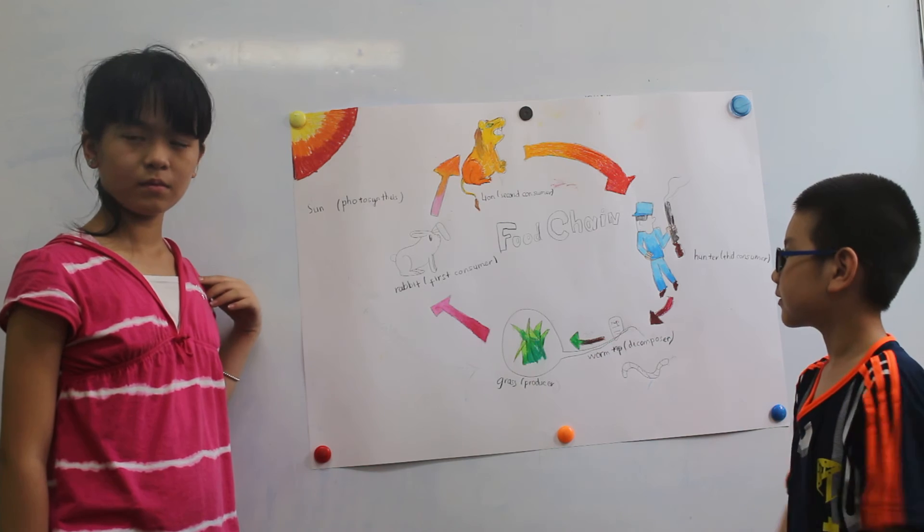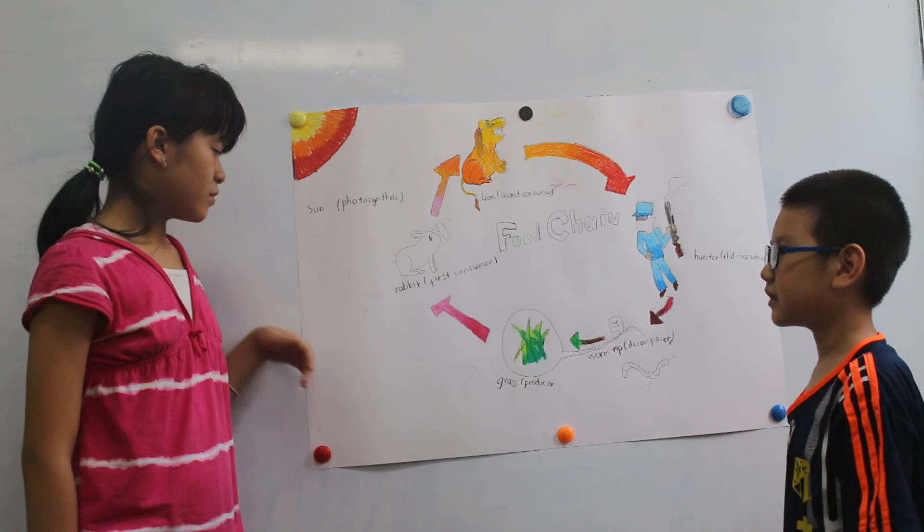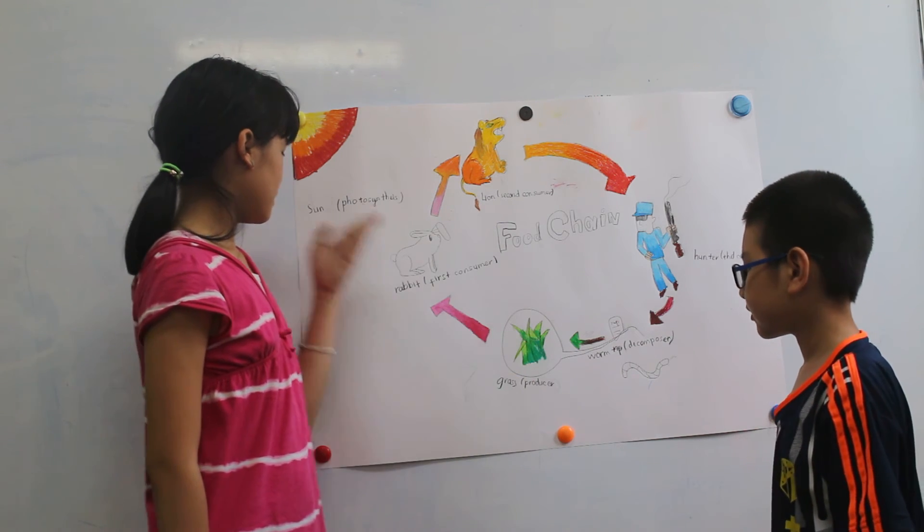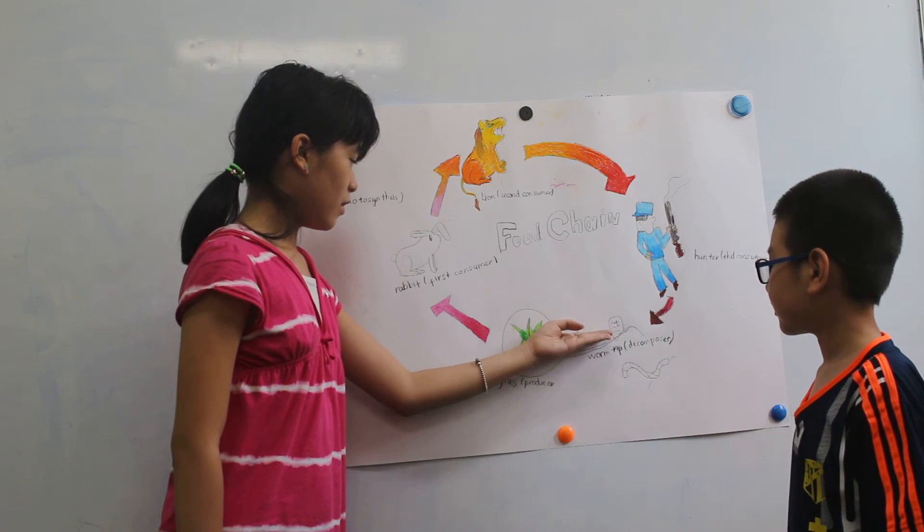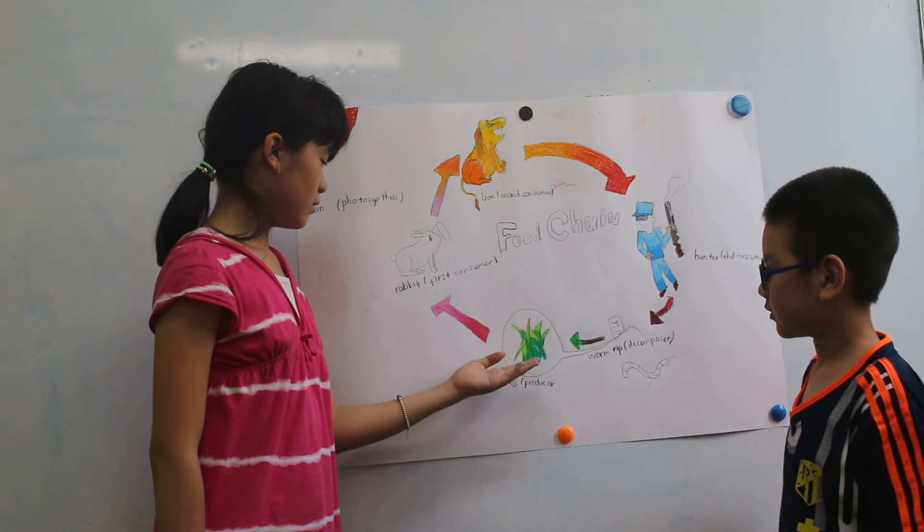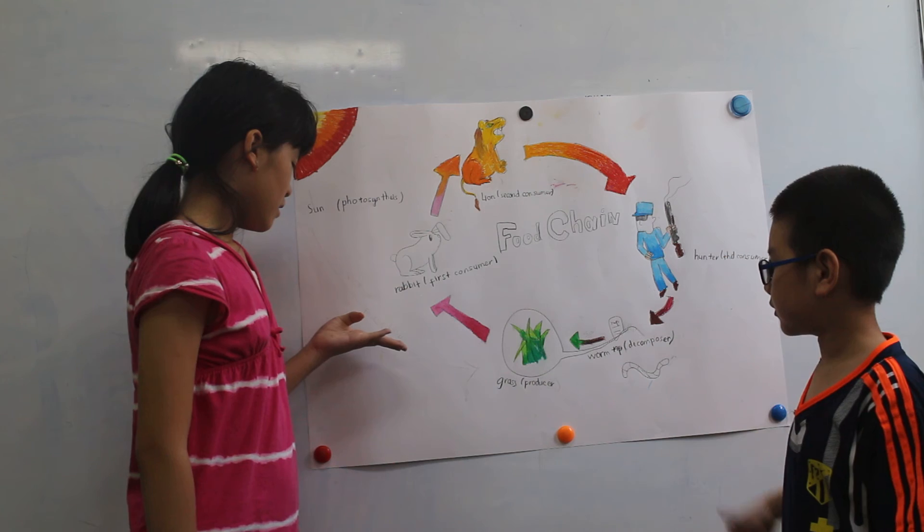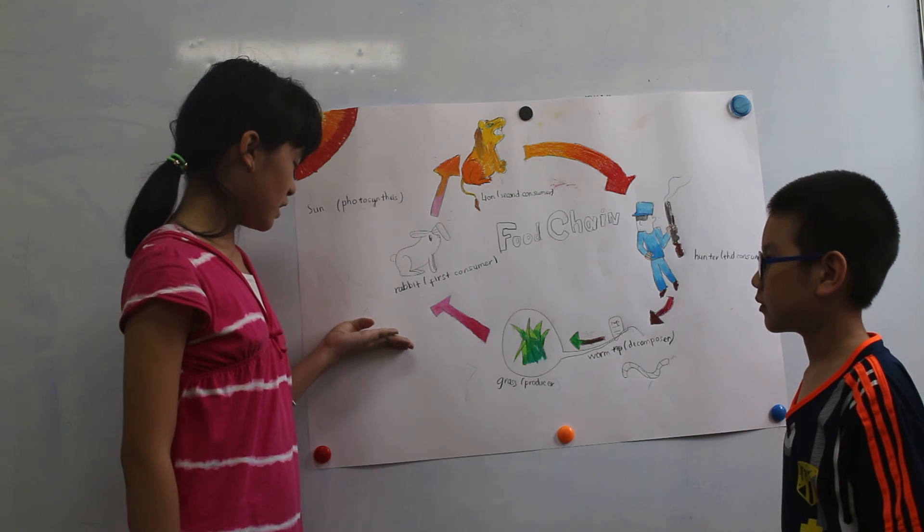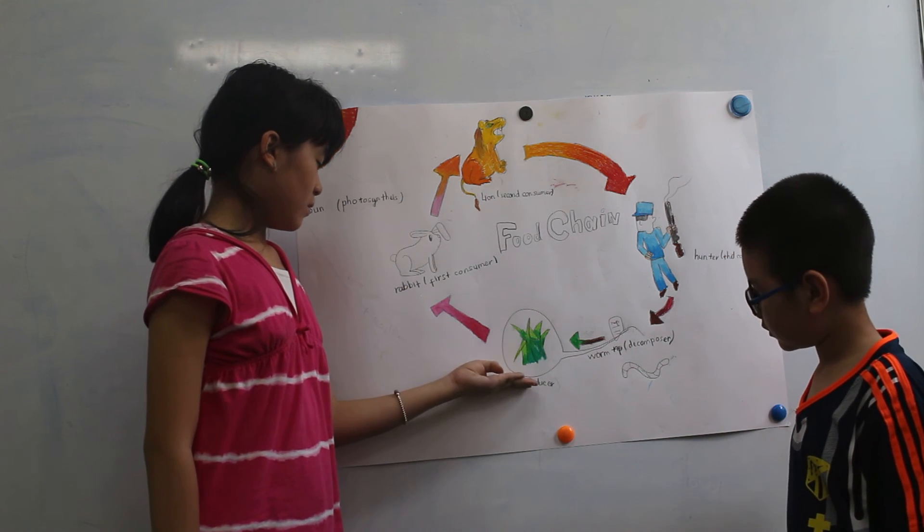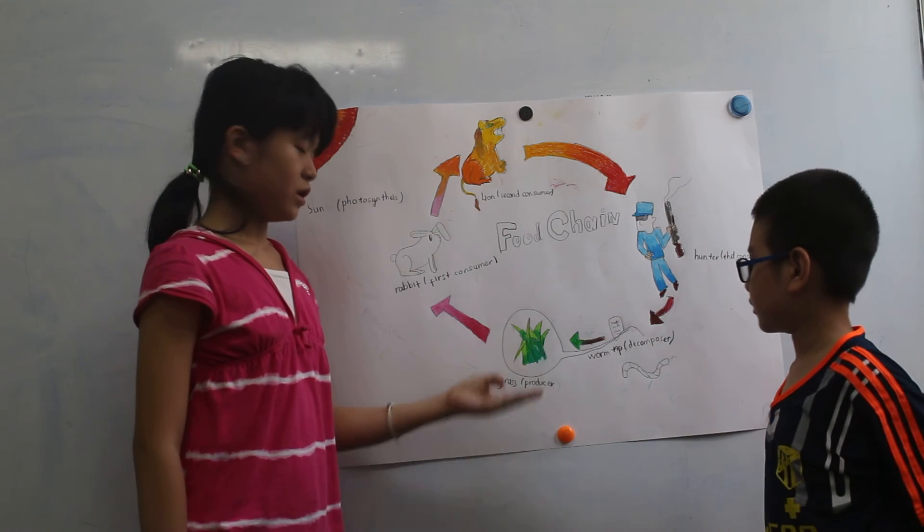Teacher: How does the grass make energy? Student: The grass uses sunlight and photosynthesis to make energy.